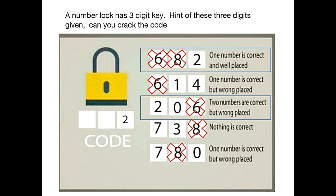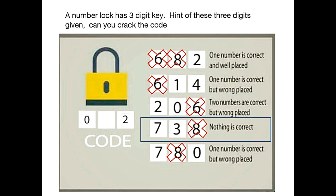Woohoo! We got our two digits. Now let's move to the fourth condition. Fourth condition says nothing is correct. So let's eliminate 7 and 3 from all the conditions.